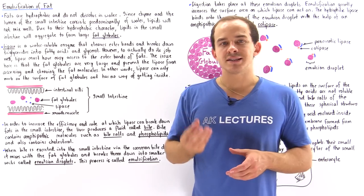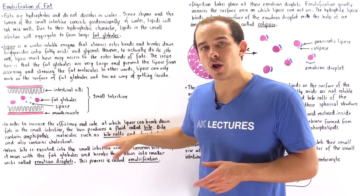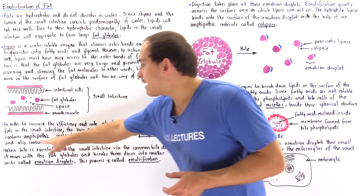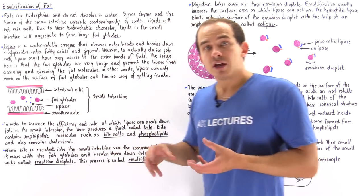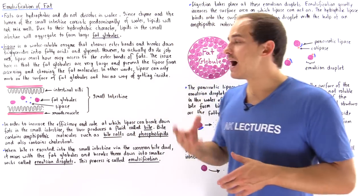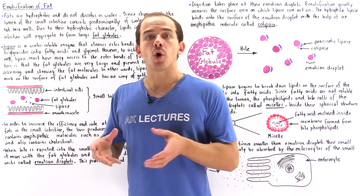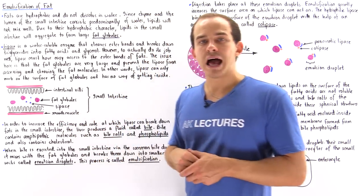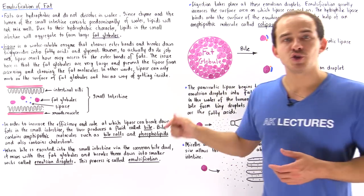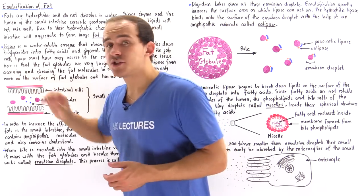Bile consists of amphipathic molecules such as phospholipids and bile salts, and also contains hydrophobic molecules such as cholesterol. Amphipathic simply means these molecules have both a hydrophobic section and a hydrophilic section. Bile is produced by the liver, stored in the gallbladder, and eventually released via the common bile duct into the small intestine.